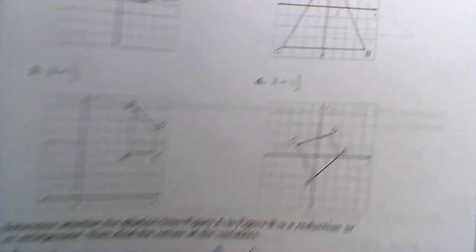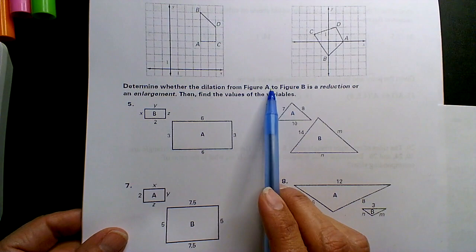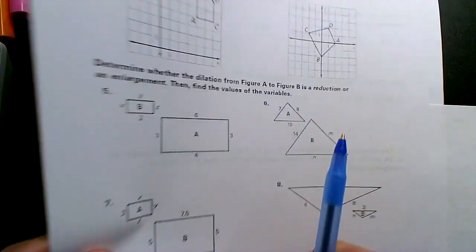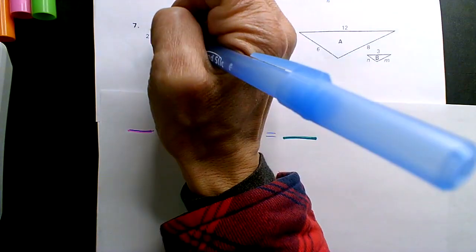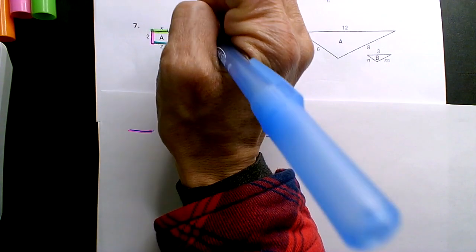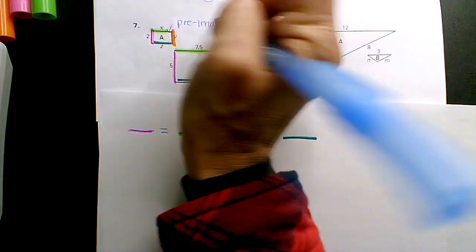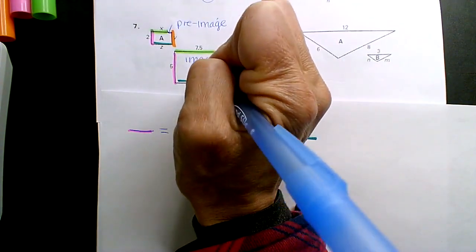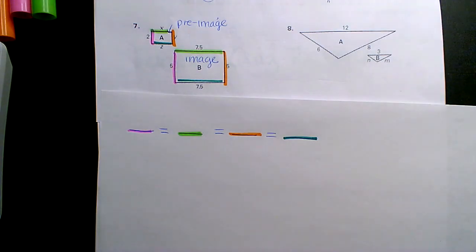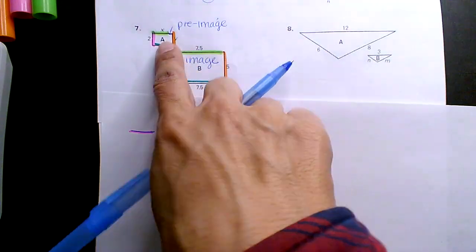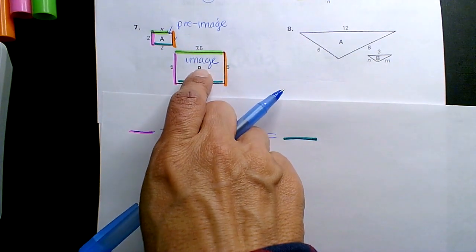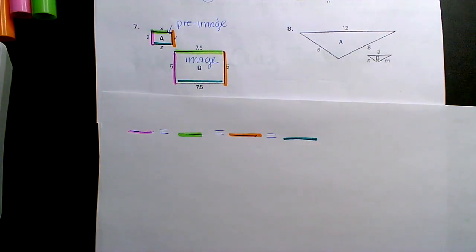It says the dilation from A to B. Okay, that means if you start at A, this is the pre-image and B is the image, yes? Okay, so listen, if you start small and you go big, is that an enlargement or reduction?